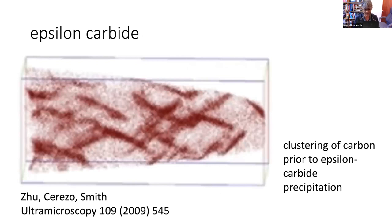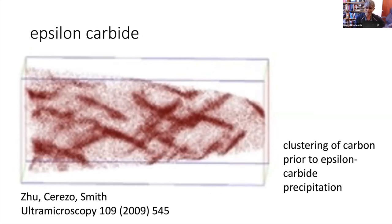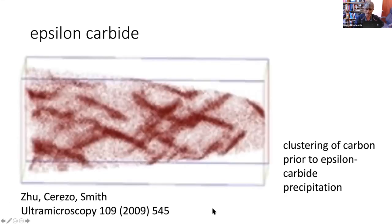The answer lies in atom probe work done at Oxford. These are not carbides — this is the oriented clustering of carbon that takes place before the epsilon carbide precipitation reaction. The lattice parameter locally increases because carbon increases the lattice parameter, and when I did a calculation allowing for an increase in the lattice parameter of the supersaturated ferrite, not only does the invariant line recover, but this line actually lies in the habit plane of the epsilon carbide. The reason for the oriented clustering is answered in the paper by Zhu, Cerezo, and George Smith.